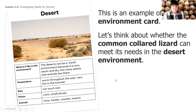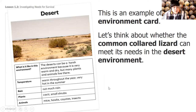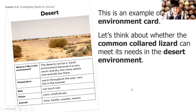Let's think about whether the common collared lizard can meet its needs in the desert. What is it like in this environment? The desert can be a harsh environment because it is very warm and dry, but many plants and animals live there. Temperature: warm throughout the year, very hot in the summer. Rain: not much rain. Plants: cacti and small shrubs. Animals: mice, hawks, coyotes, and insects.